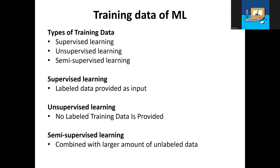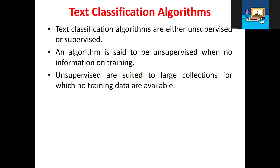We are also discussing semi-supervised learning, which combines a large amount of unlabeled data with some labeled data. So in summary: supervised is labeled, unsupervised is non-labeled, and semi-supervised is a combination involving a large amount of unlabeled data. In the text classification algorithm, the algorithm can be either supervised or unsupervised. An unsupervised algorithm has no information on training and is suitable for large collections for which no training data is available.